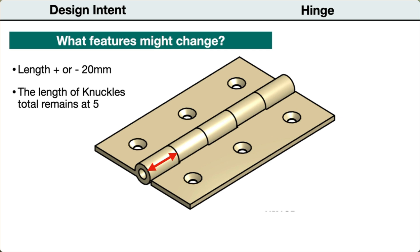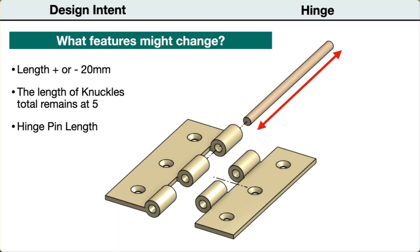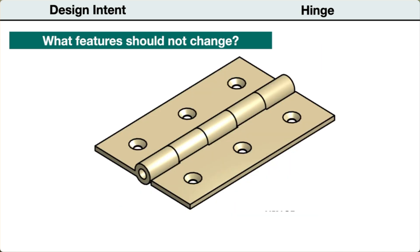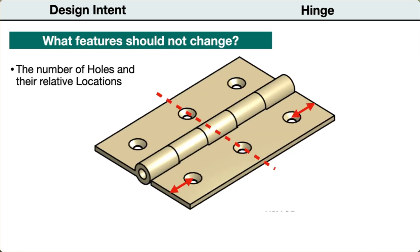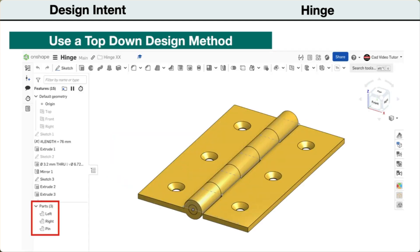Also, when the length is changed, we want the length of the knuckles to adjust so that they remain at a total of five. Last, we want the hinge pin to update to the new length. Next, we can identify what parameters should remain unchanged. We want the screw holes to remain in their current locations relative to the center and the ends. We want the width to remain unchanged. To establish and maintain the relationships between multiple features and parts, we will use a top-down design method.